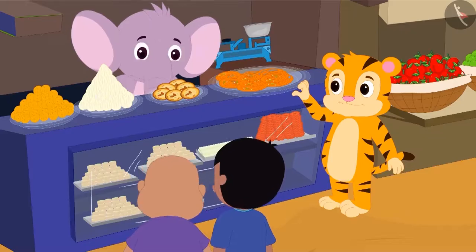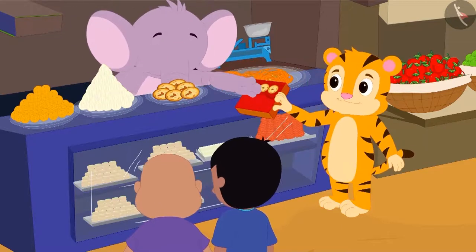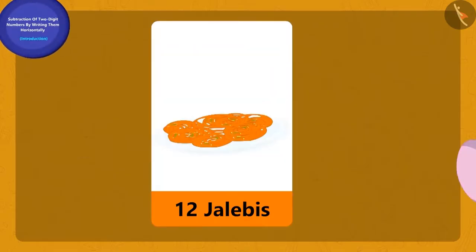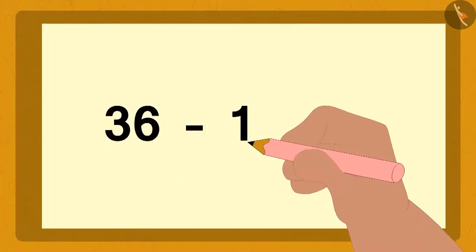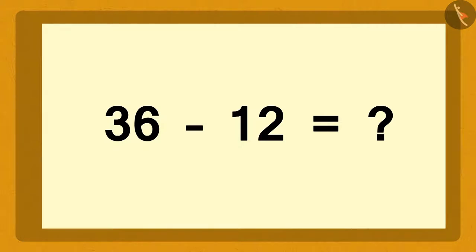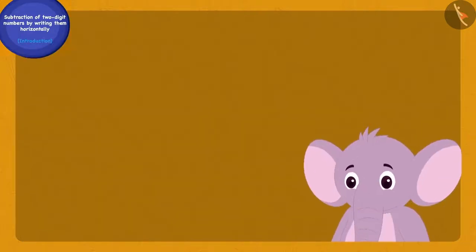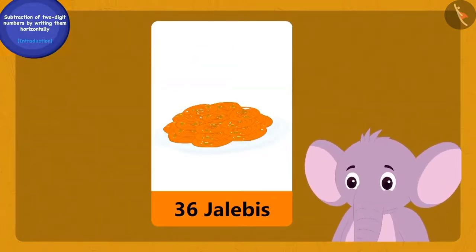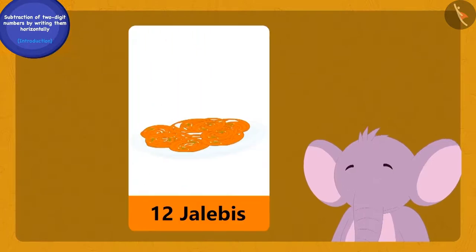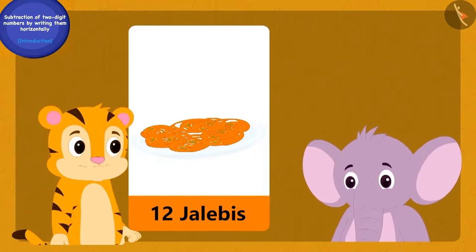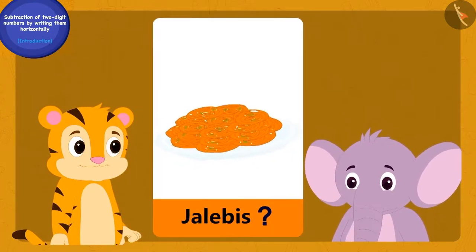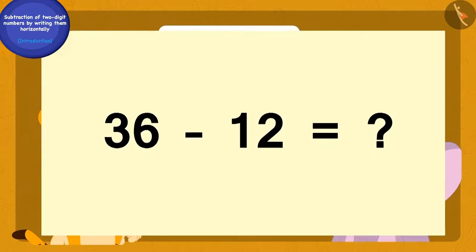When Raju and Bablu went to Appu's sweet shop, they saw that Appu had 36 jalebis. Then Shere Khan bought some jalebis from him and now he has 12 jalebis left. Bablu wrote the question on paper and asked Raju: 'Appu had 36 jalebis earlier; now he has 12 jalebis. We have to find out how many jalebis Shere Khan bought from Appu.'